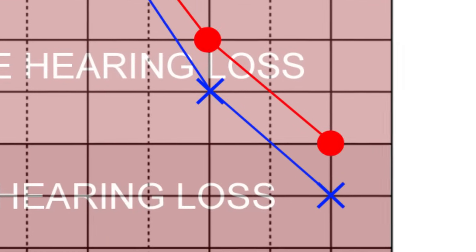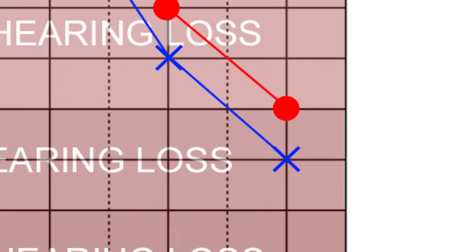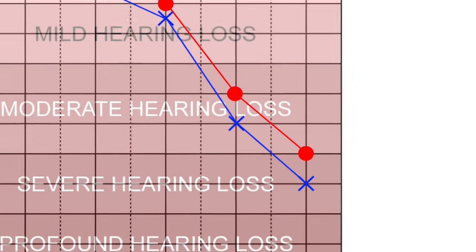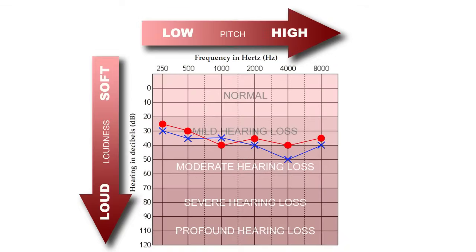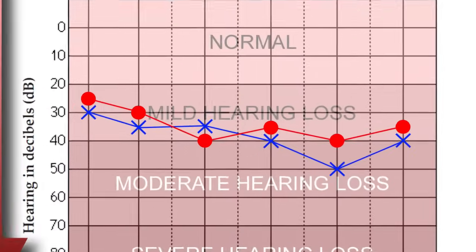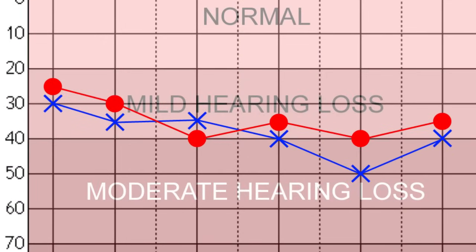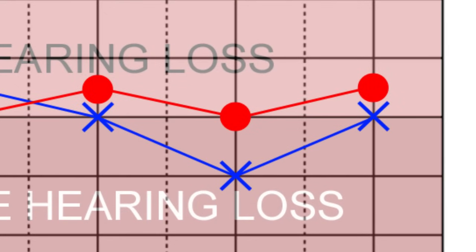In this next example, the person's hearing falls regularly within the mild hearing loss category except at 4000 Hertz where it drops slightly into the moderate hearing loss area.